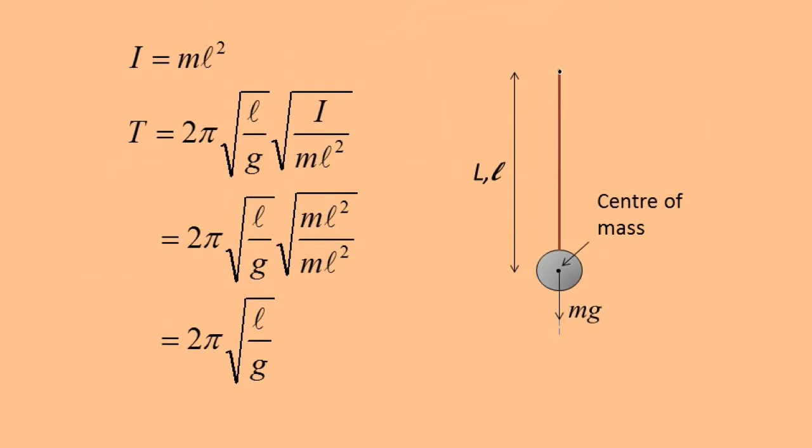The moment of inertia of a weight, a distance l away from the axis of rotation, is ml². So we see how the general equation can be used for the case of the simple pendulum, or any other pendulum, if we know its moment of inertia.